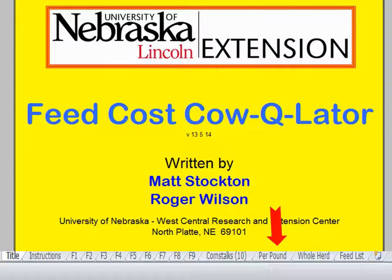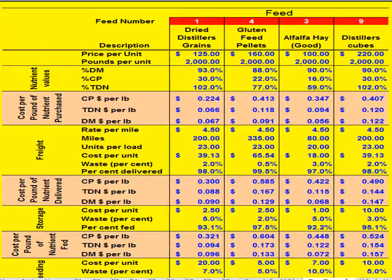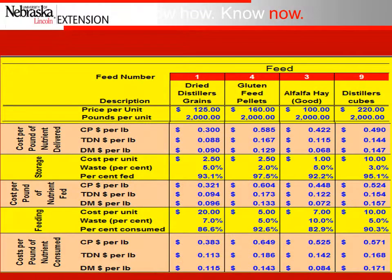Now let's look at the per pound tab. In this tab you can evaluate four different feeds. The red boxes at the top pull feed numbers from the feed tabs you entered earlier, bringing in price per unit, pounds per unit, and nutrient values. The table then shows cost per pound of nutrient purchased, then freight added to get cost per pound of nutrient delivered, then storage added for cost per pound of nutrient fed, and finally feeding costs and waste to give cost per pound of nutrient consumed for each of the four feeds. In this case, dried distillers grains has the lowest crude protein and TDN cost per pound on a nutrient basis.